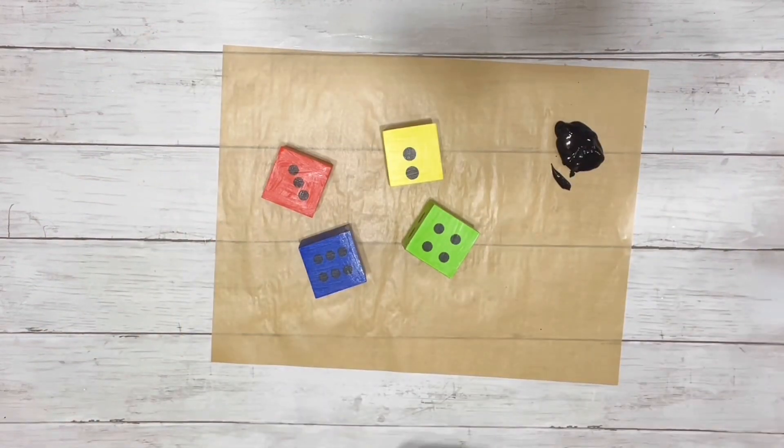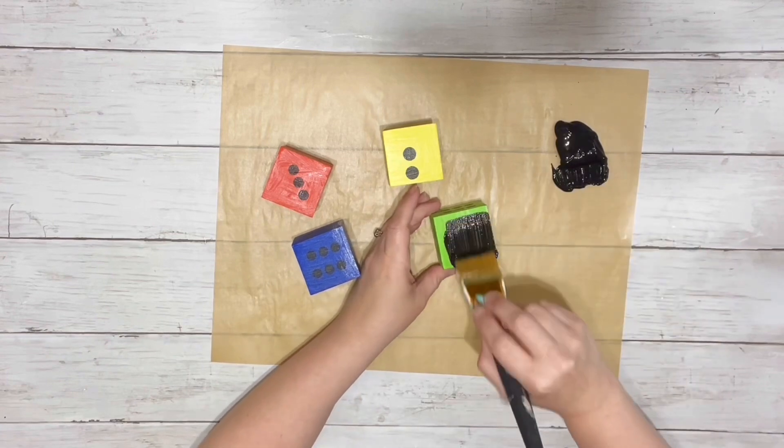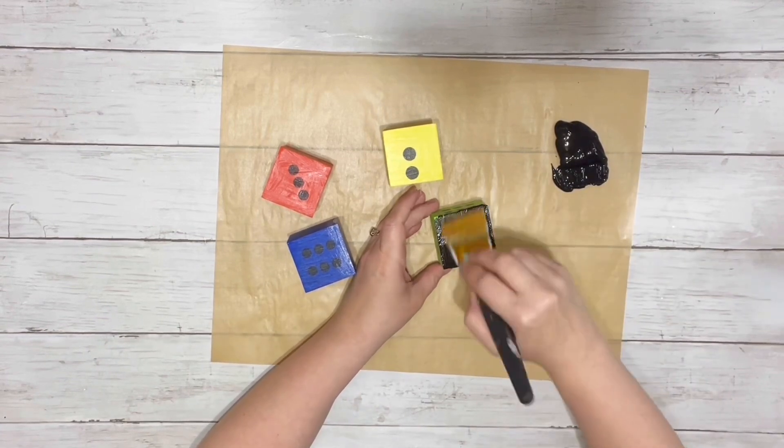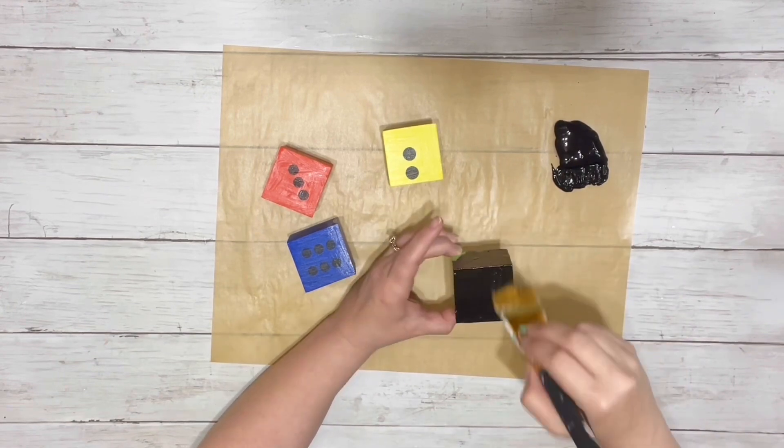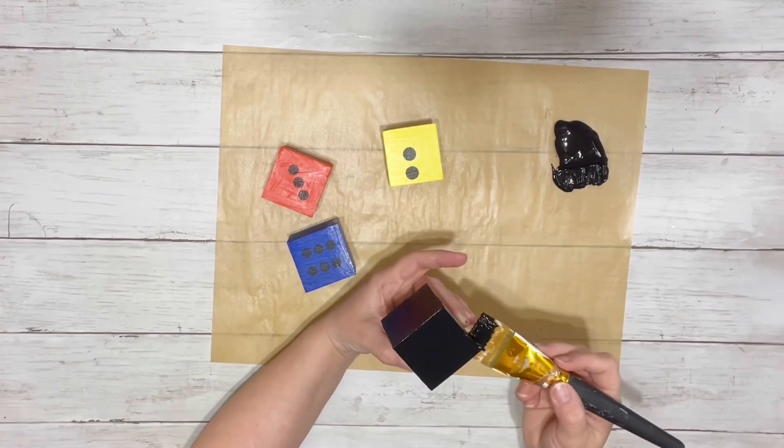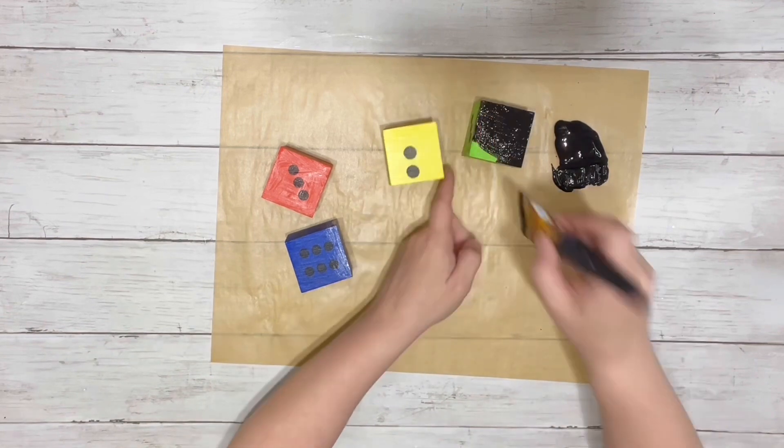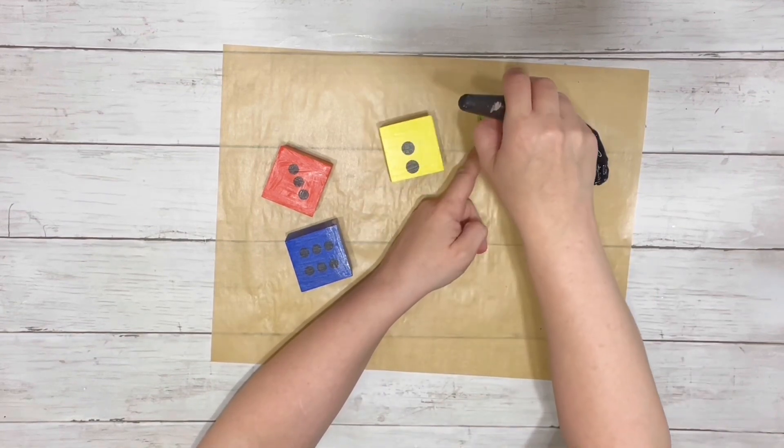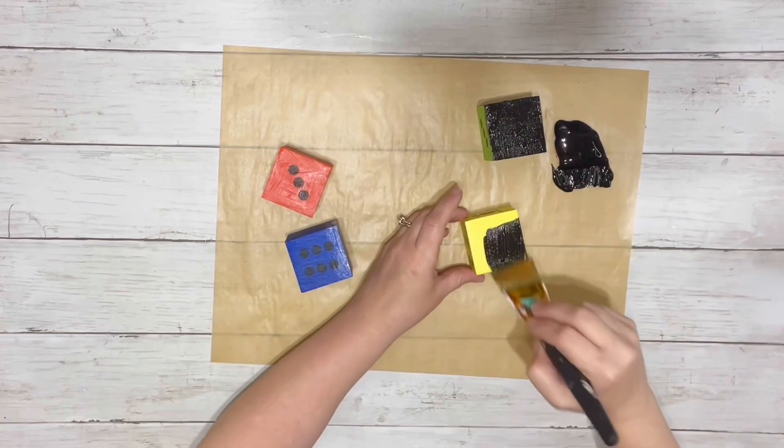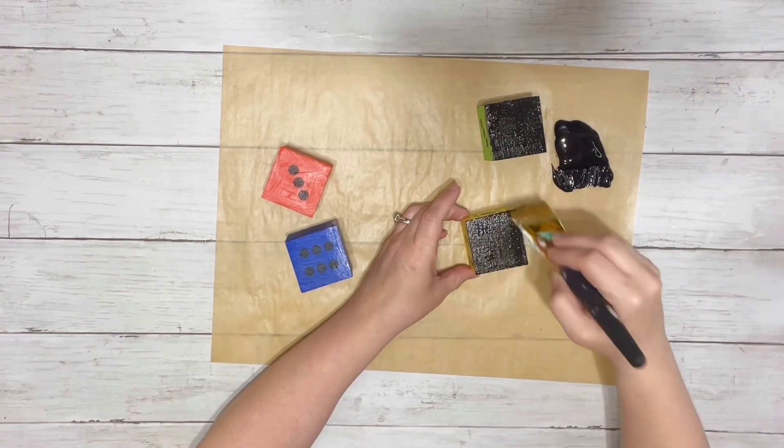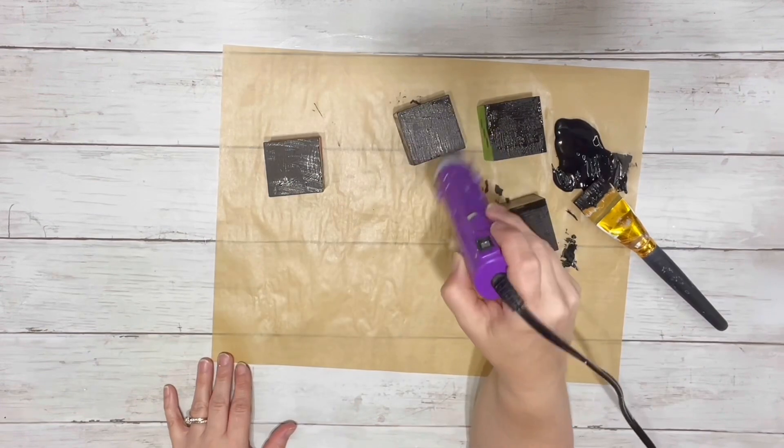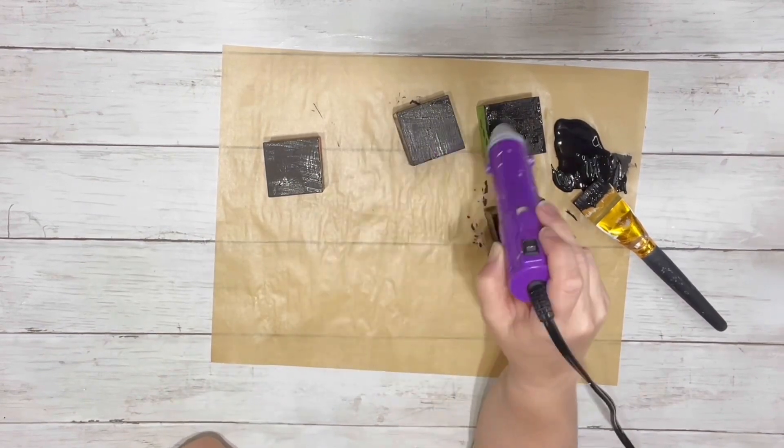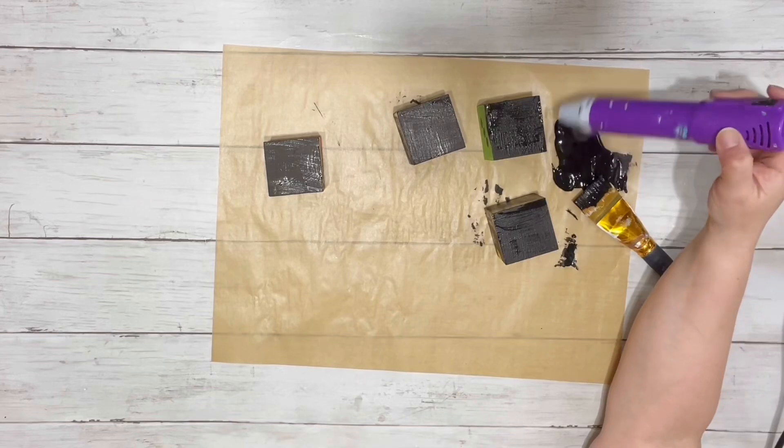After the Mod Podge was dry, I took my black chalk paint and did one coat on all four of the dice. Again, I used my heating tool to speed up the drying process. It cuts down the dry time quite a bit.